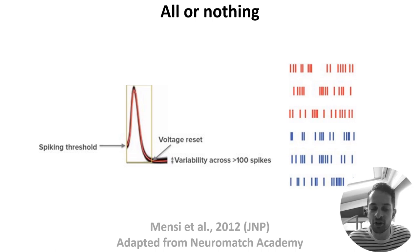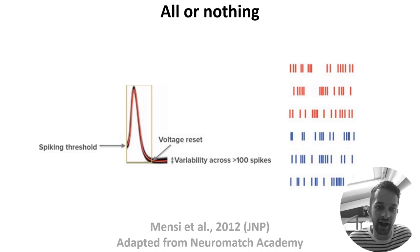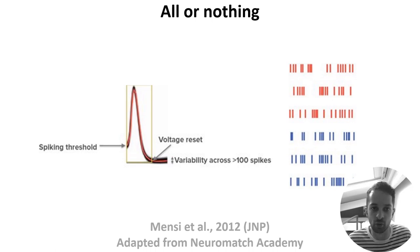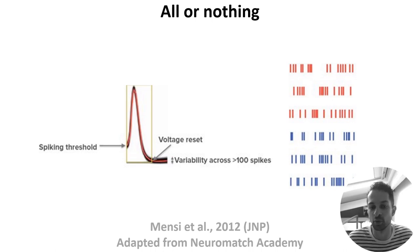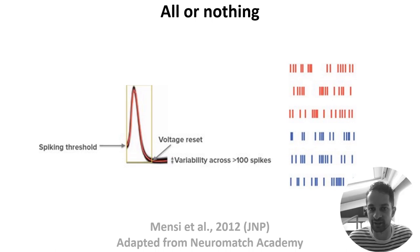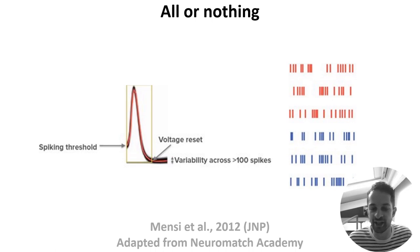We'll return to how neurons encode information later in the course. As each neuron's spikes are so similar, sequences of spikes or spike trains are often plotted as binary events. For example, this plot on the right is what we call a raster plot, and each row shows the spiking activity of a different neuron over time. But while each neuron's own spikes share the same shape, not all neurons are alike in their dynamics.